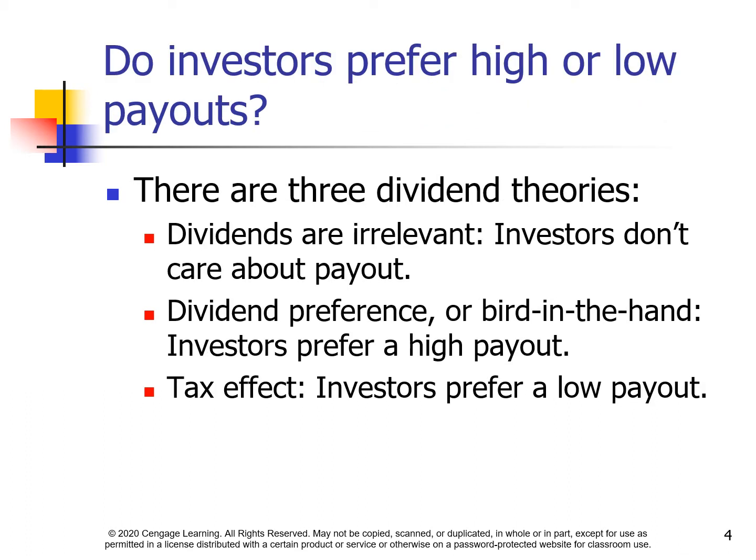Do investors prefer high or low payouts? There are three dividend theories. First, dividends are irrelevant — investors don't care about payout. Second, dividend preference, or bird in the hand — investors prefer a high payout. Third, the tax effect — investors prefer a low payout.